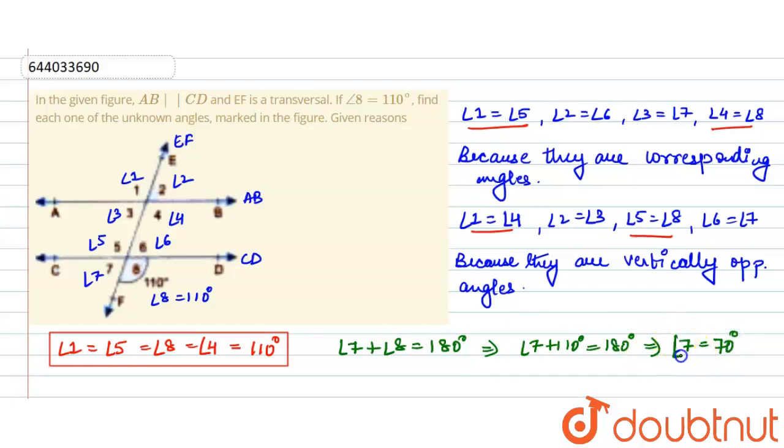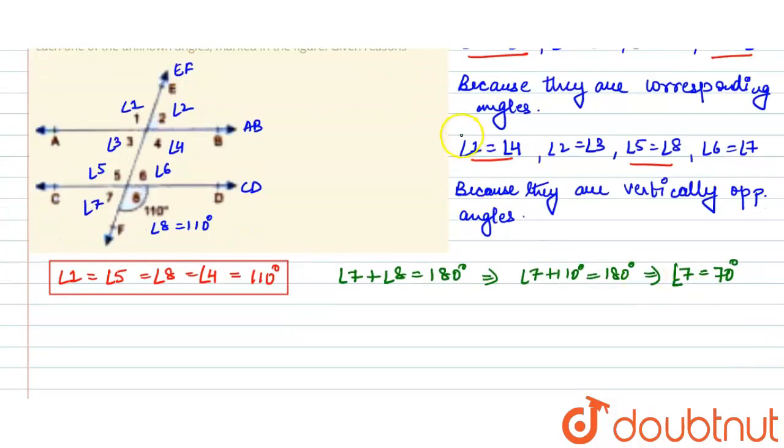So we got the value of angle 7, and also if you see from above results, angle 2 is equal to angle 3, which is equal to angle 7, which is equal to angle 6. So these four angles are also equal, and we just calculated angle 7 is equal to 70 degrees. So all these four angles will be equal to 70 degrees. Therefore we have calculated these angles also.